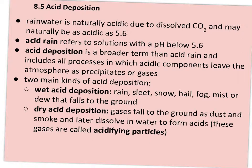Rainwater that's acidic down to as low as 5.6 is not really concerning, but when it falls below 5.6, that's when we refer to it as acid rain. The newer term is actually acid deposition, which refers to any kind of precipitation — whether wet or dry — that has a pH below 5.6.